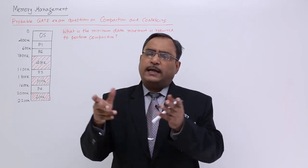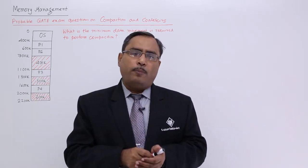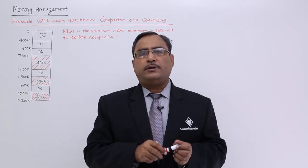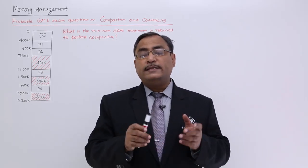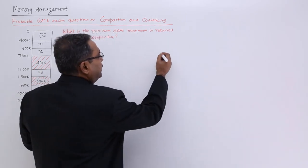So, 1400 KB of memory space can easily hold 1000 KB of process. So, in this way, the problem can be resolved. So, that is the way of doing compaction, but what about coalescing? I am not getting the issue, what is the coalescing? Let me draw one diagram here.